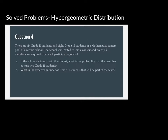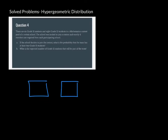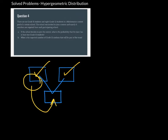This type of problem falls under hypergeometric distribution. The hypergeometric distribution always involves two groups, and you want to find the probability that when you form a subgroup from those two groups, a certain number will be in the team. In letter A, if x is the random variable for grade 11 students, we want x to be at least 2, so x must be greater than or equal to 2.